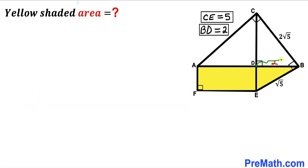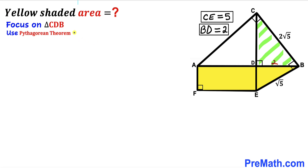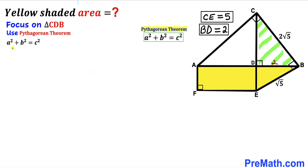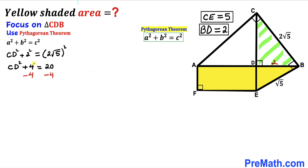Now let's focus on right triangle CDB and use the Pythagorean theorem to calculate side length CD. Filling in the formula: CD squared plus 2 squared equals (2 times square root of 5) whole squared. So CD squared plus 4 equals 20. Subtracting 4 from both sides: CD squared equals 16. Taking the square root, CD equals 4 units.